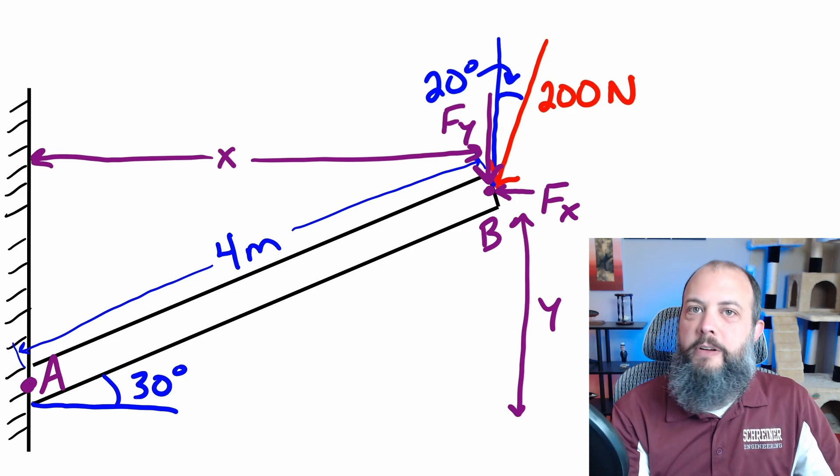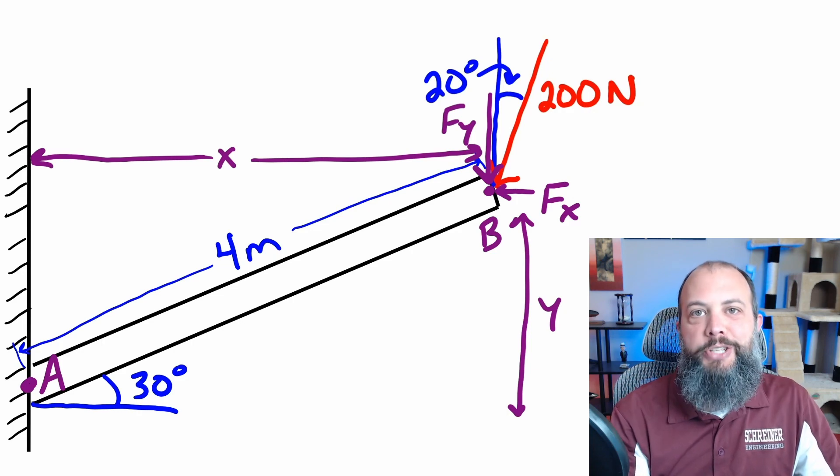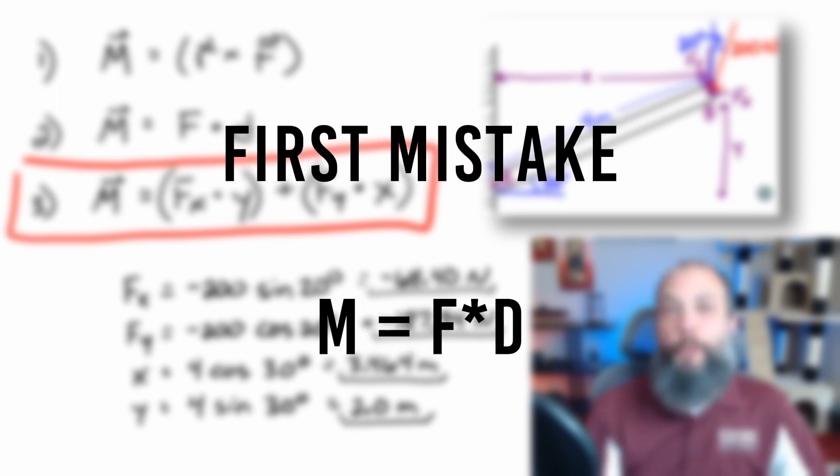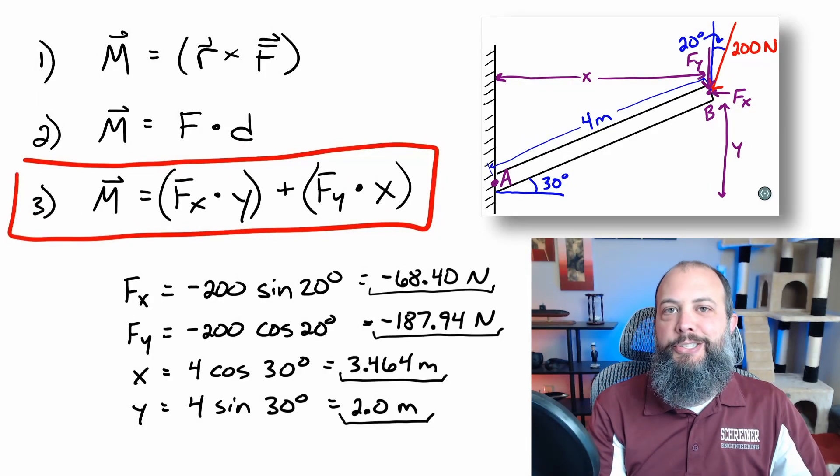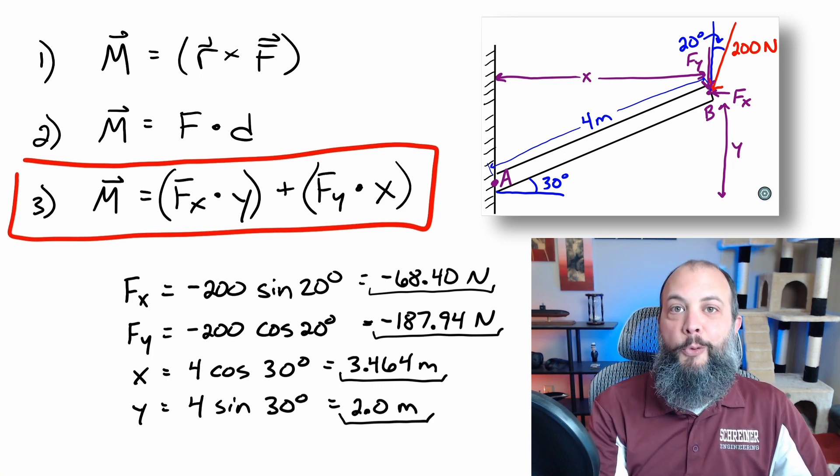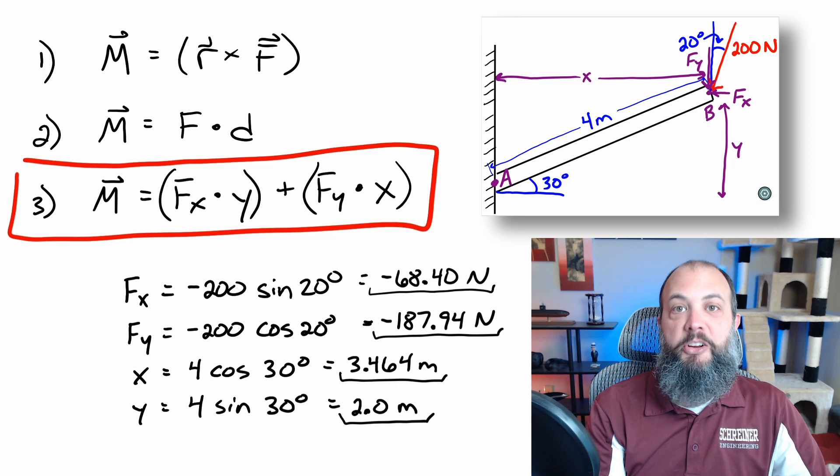So these four purple terms are the ones that you need. The horizontal component of force, vertical component of force, horizontal distance, vertical distance. So the first major mistake that students who don't pass statics are going to make is just think that moment is force times distance, multiply 200 times four and get 800 Newton meters and call it good.